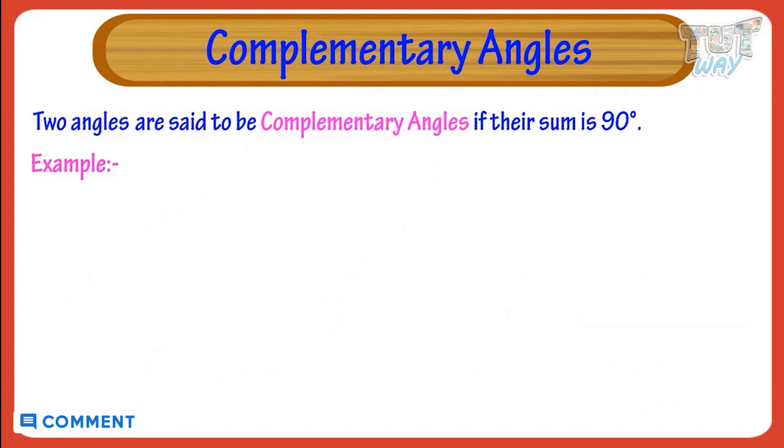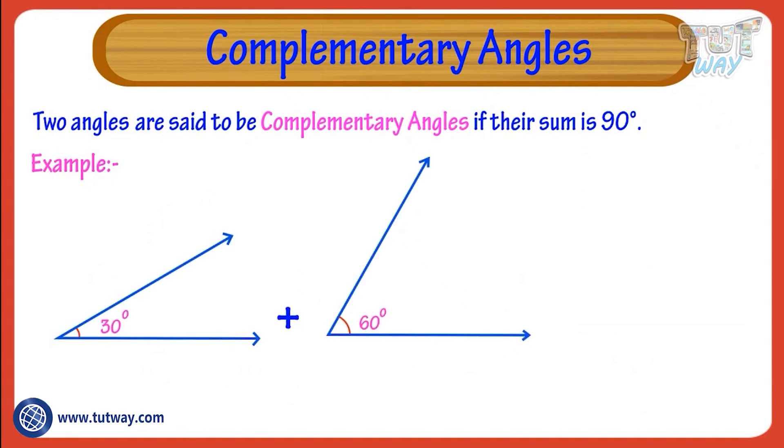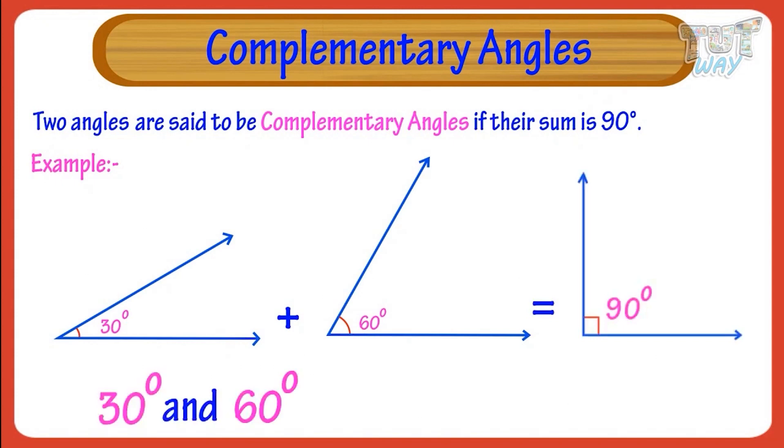Let's take another example. 30 plus 60 equals 90. So, 30 and 60 are complementary angles.